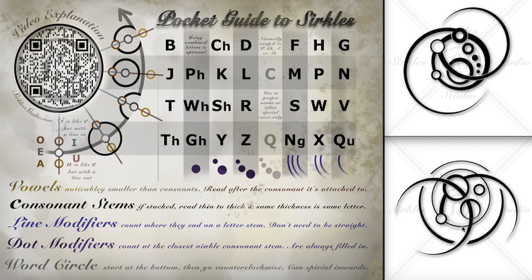So here is the bottom of this word, and our first letter is here. It's another circle inside the word circle like this one, but the line ends on it — so because it stops on that line of the stem, it counts. So one line, circle inside the word circle, is an N.